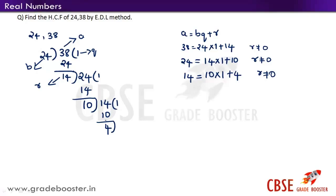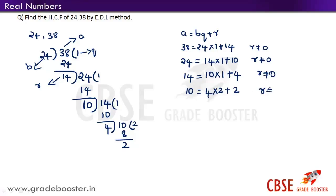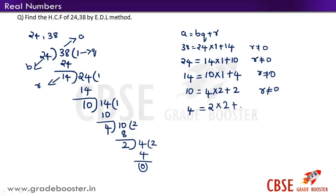Now take 4 as divisor and 10 as dividend. 4 × 2 = 8 and the remainder is 2. Expressed in the form of Euclid's division lemma: 10 = 4 × 2 + 2. The remainder is still not equal to 0. Continuing the division: 2 divides 4 two times — 2 × 2 = 4 and the remainder is 0. Expressed as: 4 = 2 × 2 + 0.